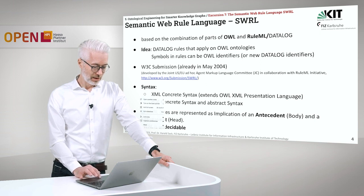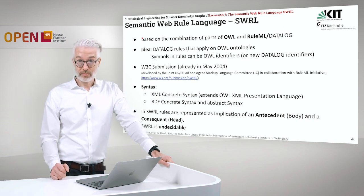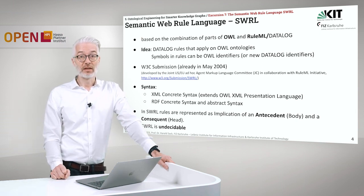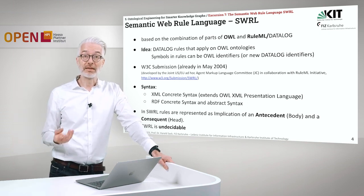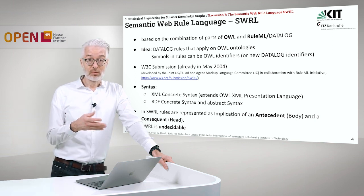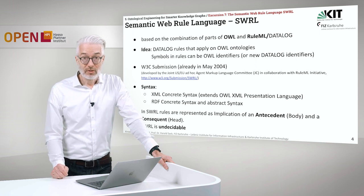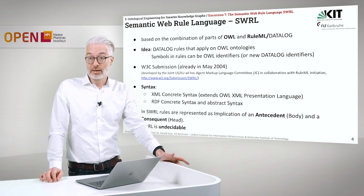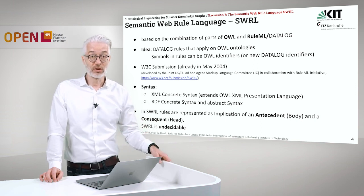For better visibility, I will switch on my laser pointer, and we start with the Semantic Web rule language, SWRL. SWRL is based on a combination of parts of OWL — the Web Ontology Language — and RULE-ML, which is the same as Datalog. The basic idea is that Datalog rules apply on OWL ontologies, and the symbols in the rules can be OWL identifiers or new Datalog identifiers. SWRL has been around for a while; in 2004 there was a W3C submission, and it can be used in practical applications, for example in the Protégé Ontology Editor.